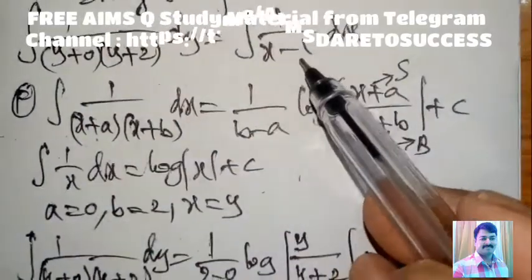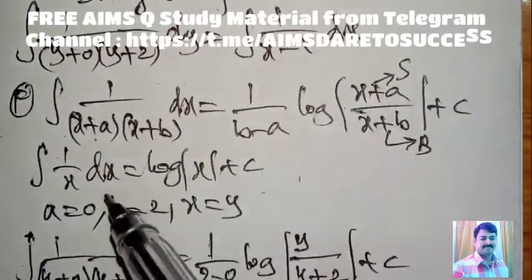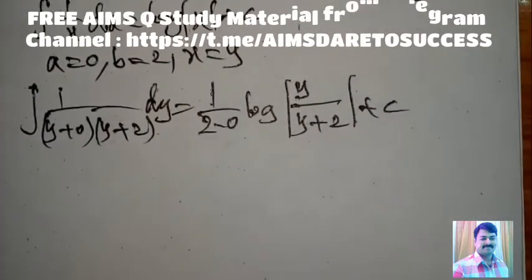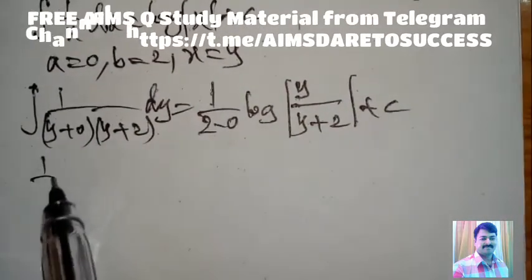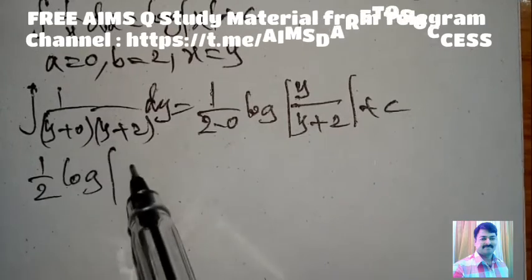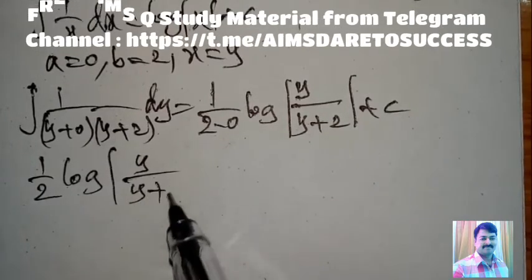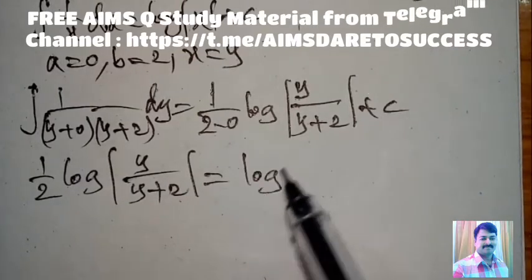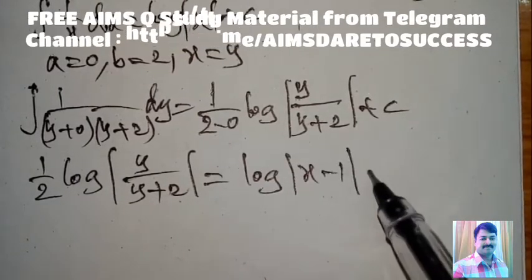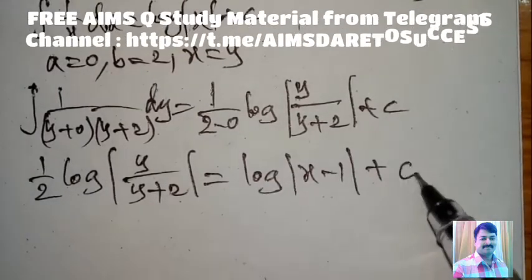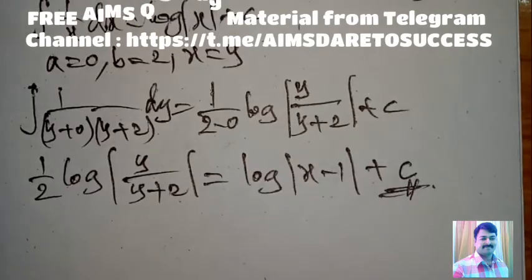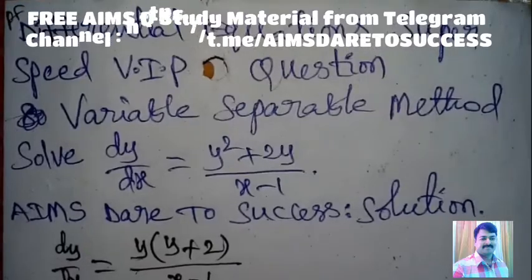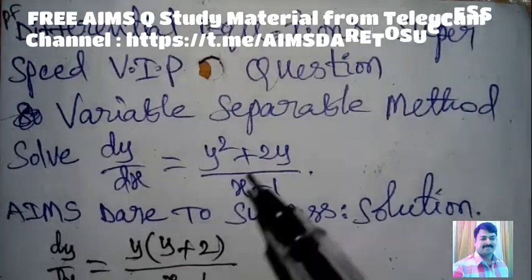The right-side integral of 1/(x − 1) dx = log|x − 1|. So the final answer is: (1/2) log|y/(y + 2)| = log|x − 1| + C. Very easy answer.